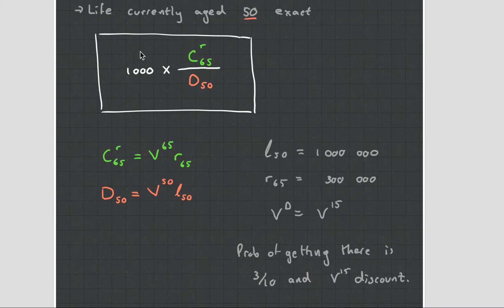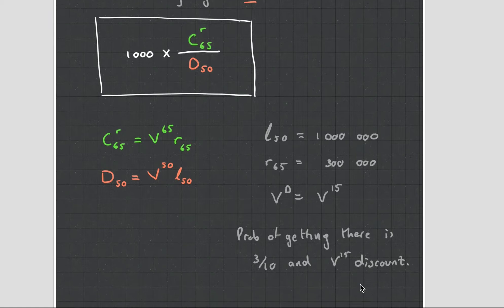So you can see in order to do subject CT5, you need to have a good grounding of subject CT1, CT3, and CT4. And then what we do is we take this 1000 rand, we times it by this commutation function, which is basically a combination - that's why it's a combination of the probability of the person retiring, and the discount of the interest. Or if you want to think of it another way, it's the force of them retiring, and it's the force of interest.